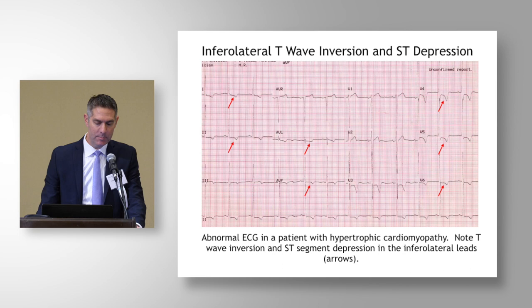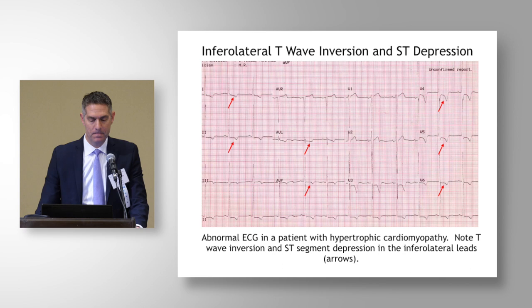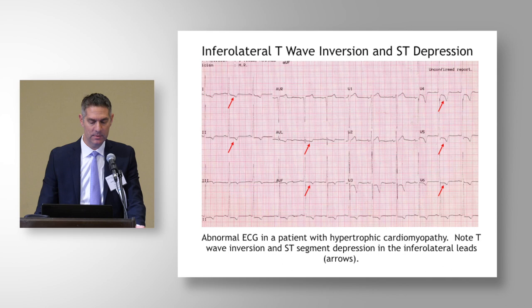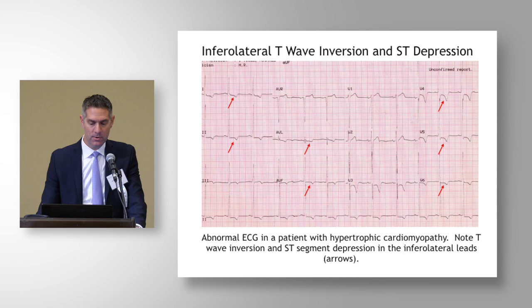Then I move over to the limb leads — starting with AVF, up to AVL, over to lead two and up to lead one — again looking for pathologic Q-waves, ST-segment depression, and T-wave inversion. I don't stare too long at lead three because we've excluded certain things from lead three that are more common occurrences and not necessarily abnormal findings — specifically Q-waves and T-wave inversion. Once I've gone through looking for Q-waves, ST-segment depression, and T-wave inversion, I go back to looking at the limb leads for axis, atrial enlargement, the rhythm strip at the bottom for rhythm, and calculation of the QT interval.